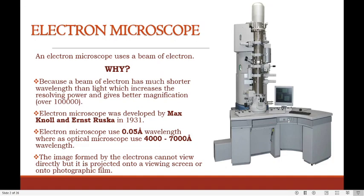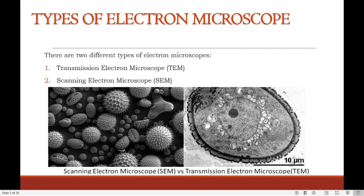Electron microscope was developed by Max Knoll and Ernest Ruska in 1931. Electron microscopes use 0.05 angstrom wavelength whereas an optical microscope uses 4000 to 7000 angstrom wavelength. The image formed by electrons cannot be viewed directly but is projected onto a viewing screen or onto a photographic field.